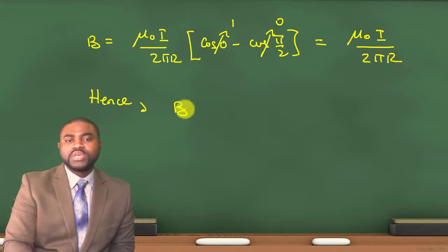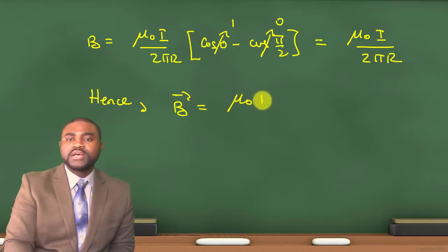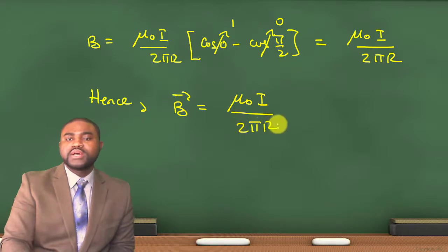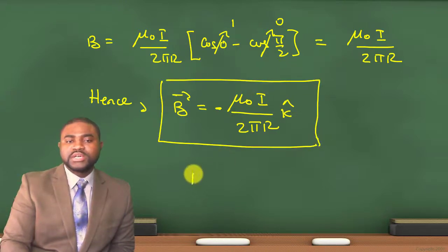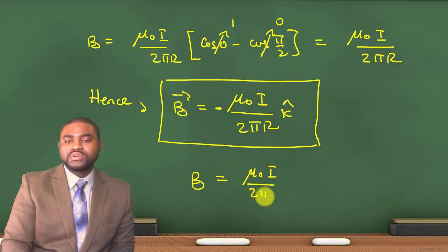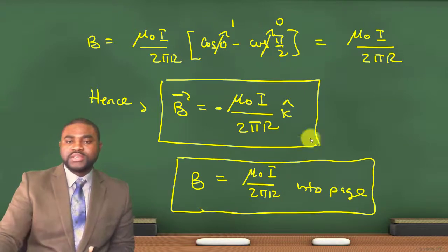Since cosine(0) equals 1 and cosine(π/2) equals 0, this gives B equal to μ₀I divided by 2πR, in the negative k̂ direction — or you could express it as B equals μ₀I over 2πR, which is directed into the page. Thank you.